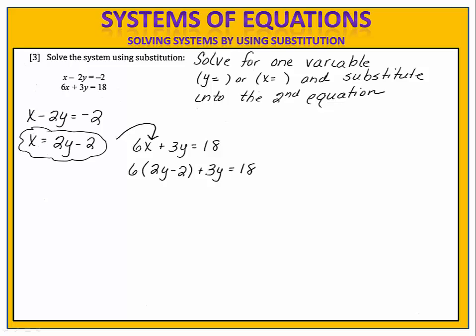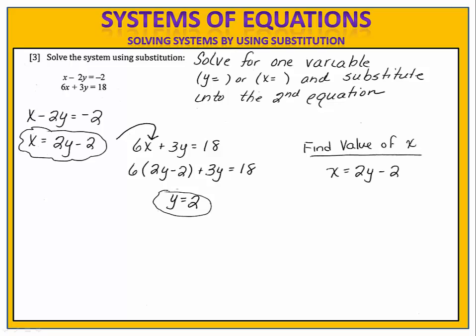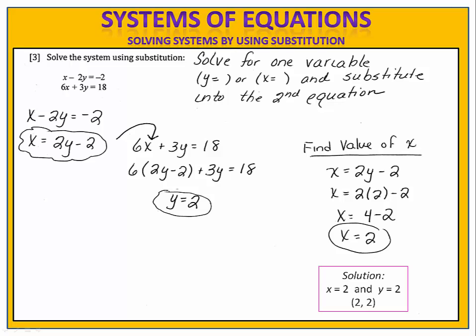Now we solve the remaining equation and we find that y equals 2. So we now know the y value that the two equations have in common. To find the value of x, choose any one of the two equations. I'll choose x equals 2y minus 2. Take the y value and substitute it in. When we calculate, we find that x also equals 2. So the solution to this equation is the point (2, 2). x equals 2 and y equals 2 — those are the only two numbers that you can substitute into the original two equations and both of them will be true simultaneously.